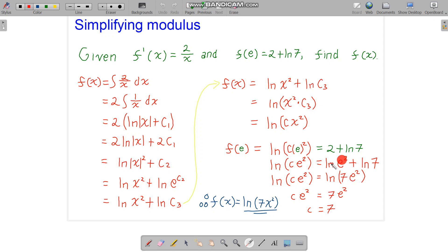which is 2 actually here. We get, now we use the product rule, ln 7e squared. And we do e to the power of, get rid of the ln. c e squared equals 7 e squared. So that means c is 7.